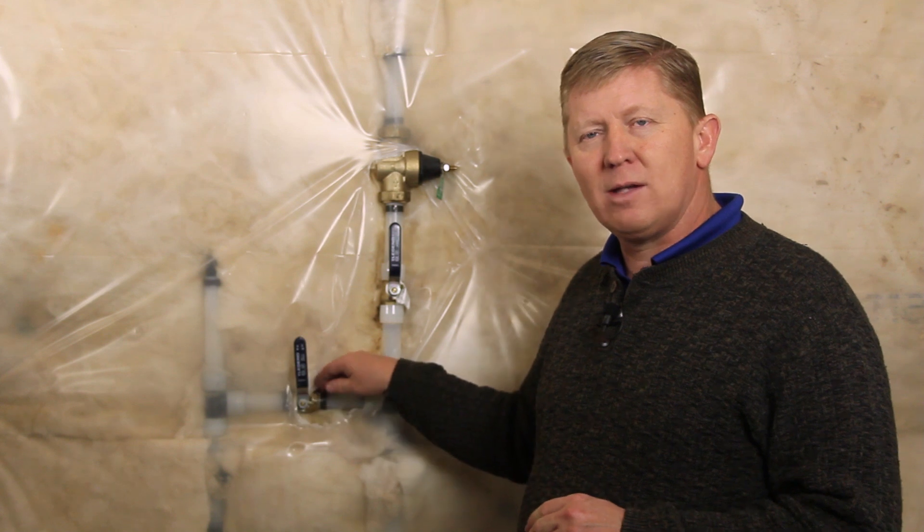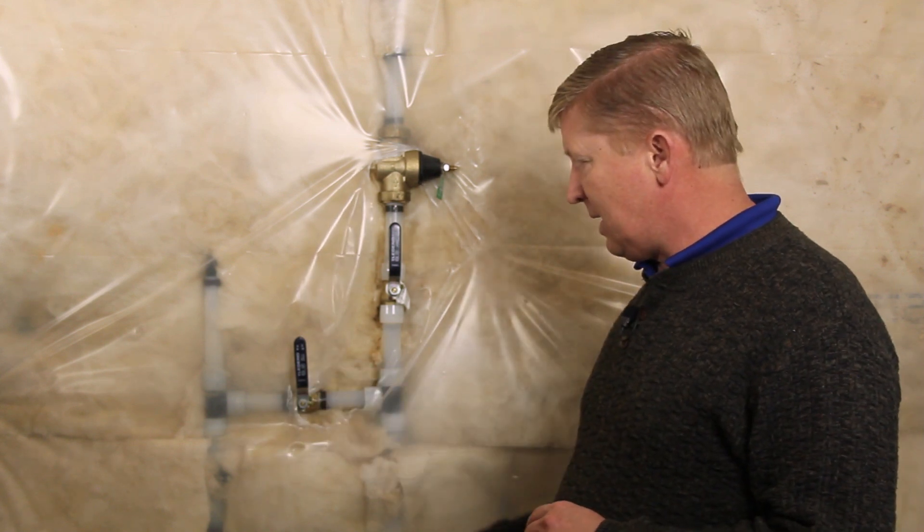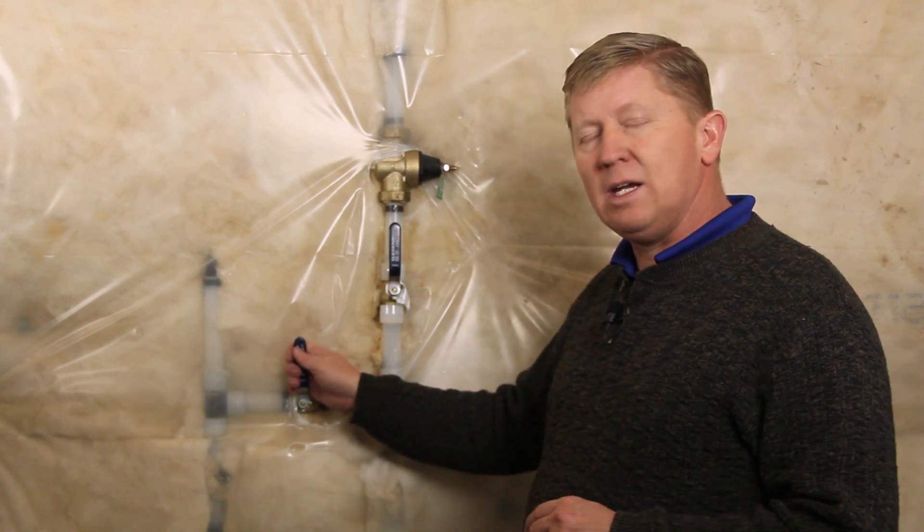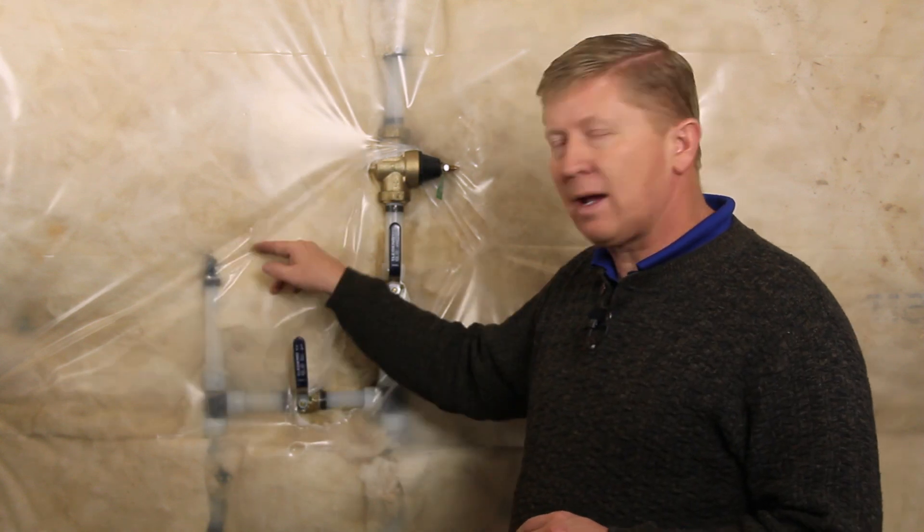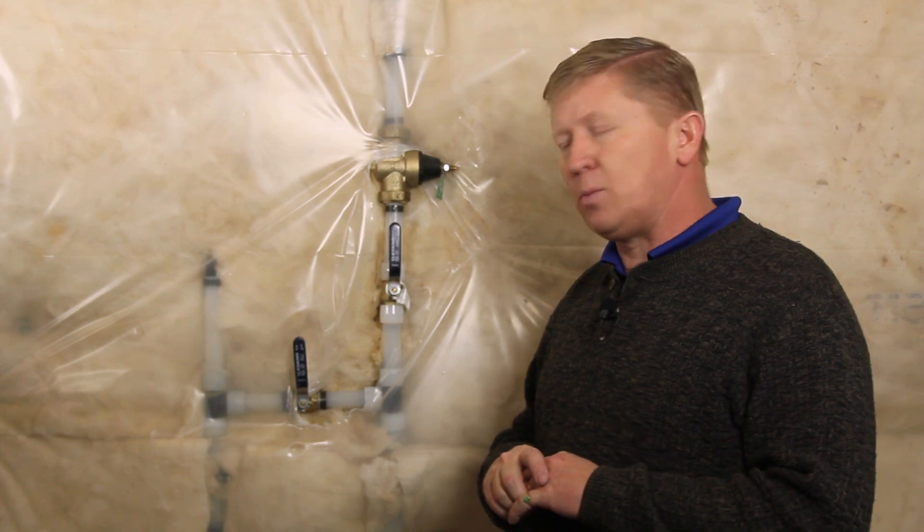Someone along the way wised up and decided to put this in the basement. You have your main line coming into the house, up and over to here. From here it tees and goes back up outside to your sprinkler box that supplies the water for your sprinkler system.